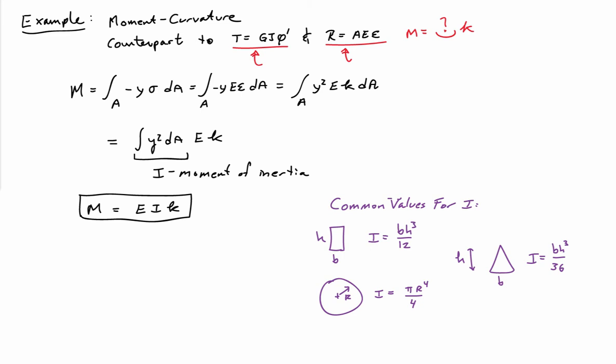A couple of common values for I are useful to have memorized. If you have a rectangular cross-section, which is very common, I is equal to BH cubed over 12. That's just doing the integral of y squared over the cross-section. If you have a circle, radius R, so a round bar, it's pi R to the fourth over 4.